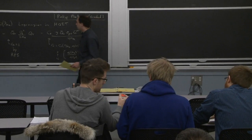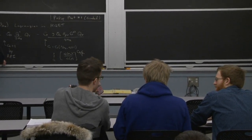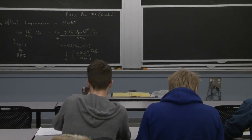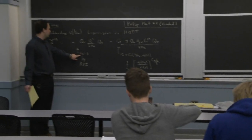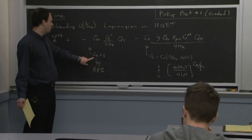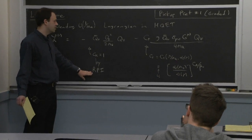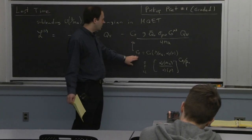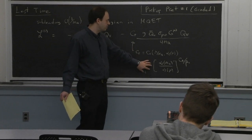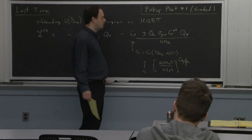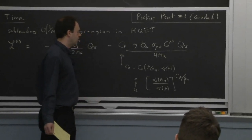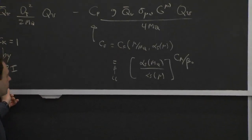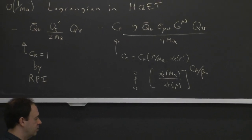So this is where we left off. We were talking about reparametrization invariance, and what we showed last time is that the Wilson coefficient of this operator is 1 to all orders in perturbation theory because of that symmetry. The Wilson coefficient of this other operator is not, and at leading log order it would be given by some expression. In general, this is just the lowest order expression and it gets perturbatively corrected — it's actually known at three loops.